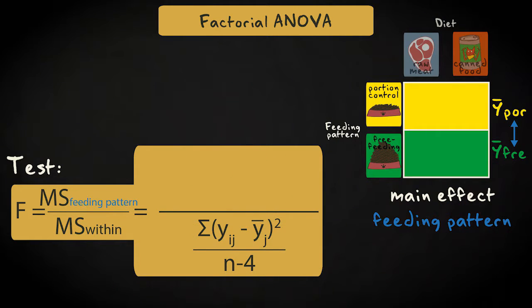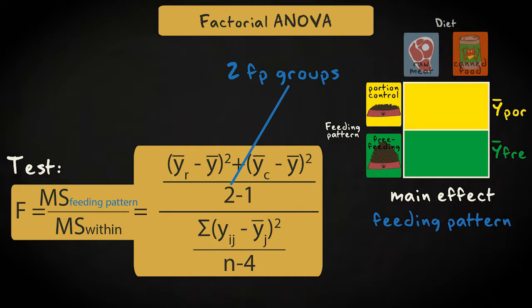We can test the main effect of feeding pattern the same way. We calculate the between-group variance by comparing the marginal means of the controlled and the free-fed cats, and divide by the same within-group variance we just calculated for the main effect of diet. We can now test whether mean health score differs for cats fed in controlled portions and free-fed cats.